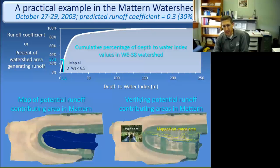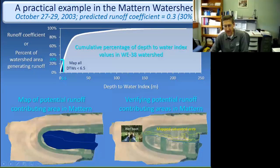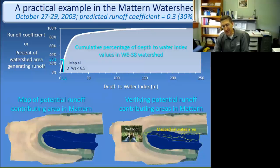We're also trying to corroborate these with actual on-the-ground mapping of saturated areas. We basically send technicians out and do what's called the wet boot or squishy boot method — they have a GPS unit and walk around mapping saturated areas soon after a rainfall event. This is some of the saturated area mapping done right after the October 27th to 29th rainfall event. Using various statistics, we can look at how well our predicted saturated areas compare against those observed, to give people a sense of how accurate and reliable these field-scale forecasts really are.